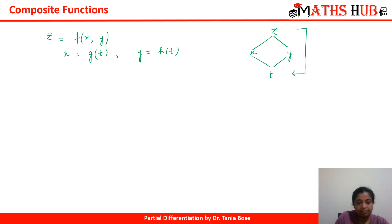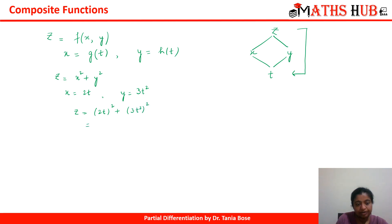Let's take an example: if z = x² + y², and x = 2t and y = 3t², then we can substitute the values of x and y. We get (2t)² + (3t²)² = 4t² + 9t⁴.